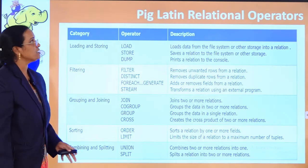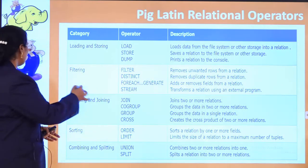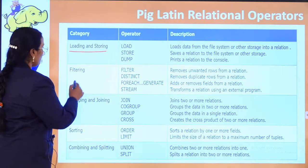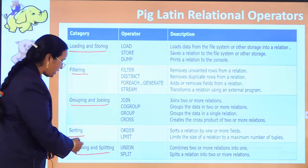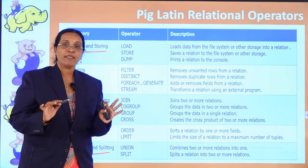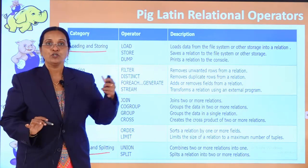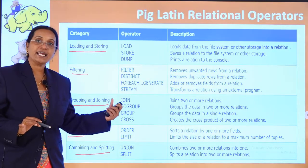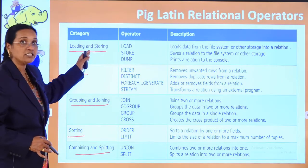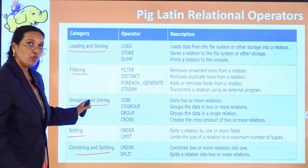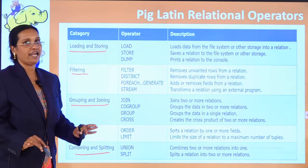The relational operators in Pig are categorized under five categories: loading and storing, filtering, grouping and joining, sorting, and combining and splitting.